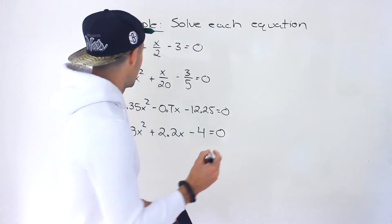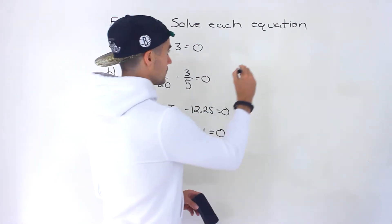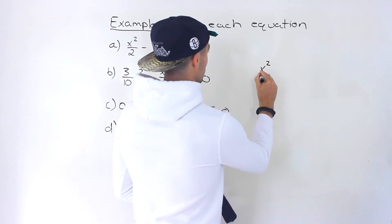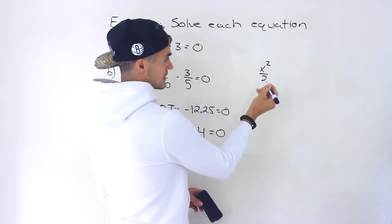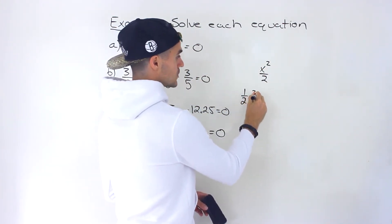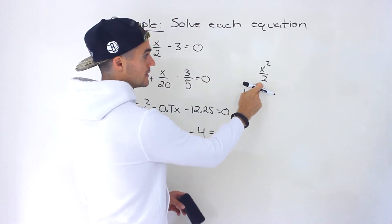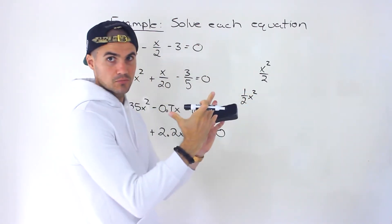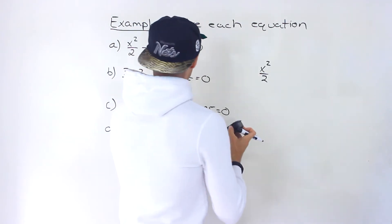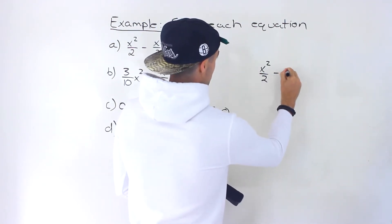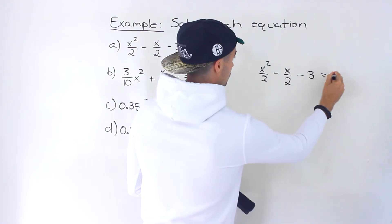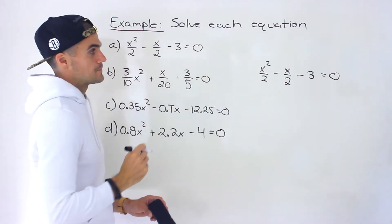So personally, what I do — let's write out this first one. We've got x squared over two. By the way, x squared over two is the same as one half x squared, so you may see it written in that format. Sometimes they'll be put together. So we've got x squared over two minus x over two minus three is equal to zero.